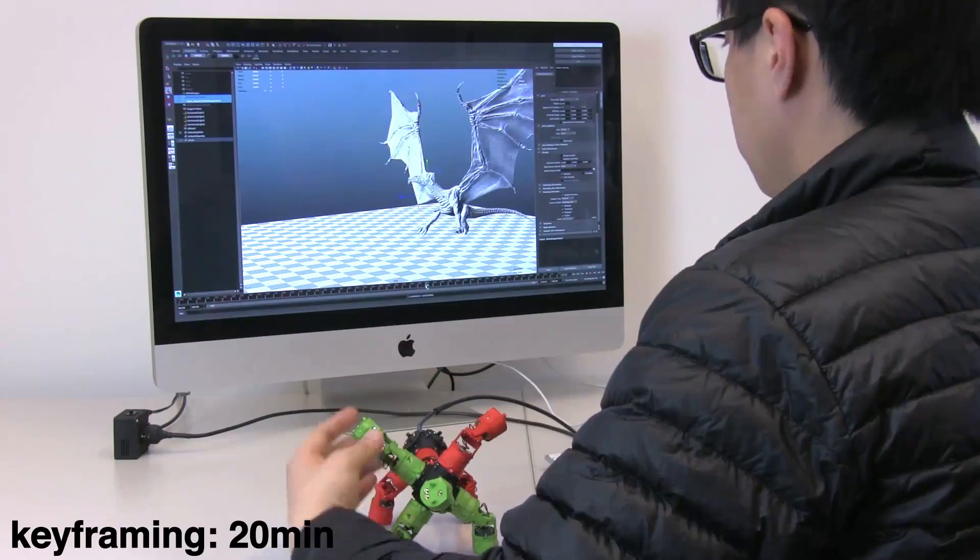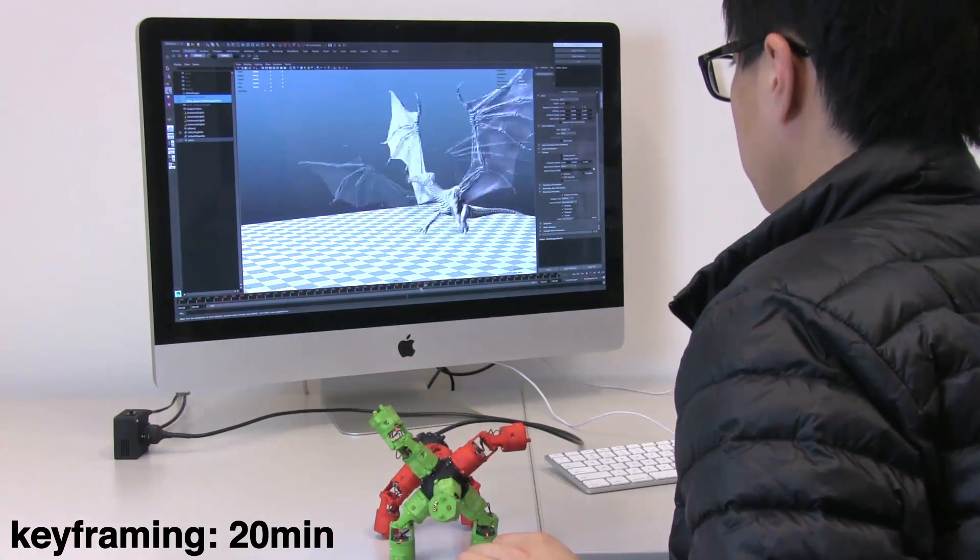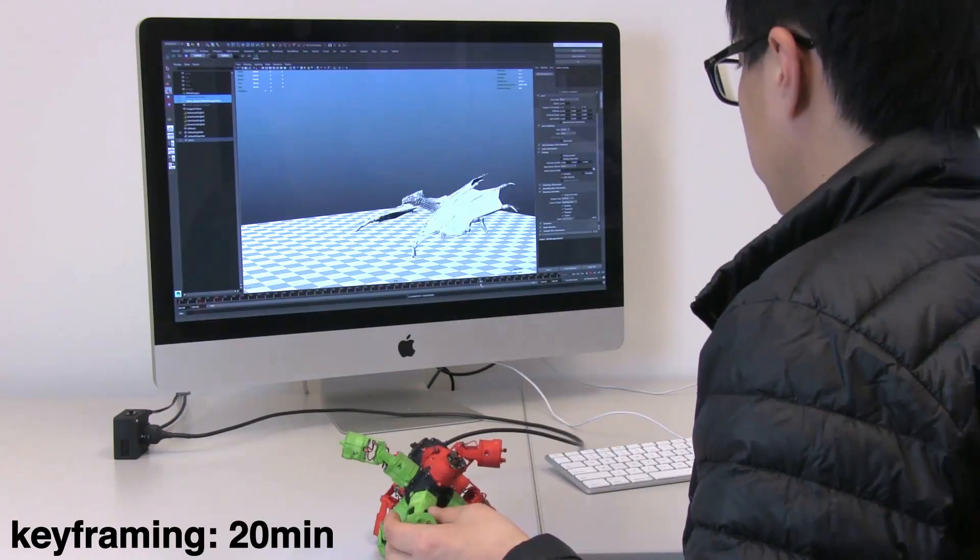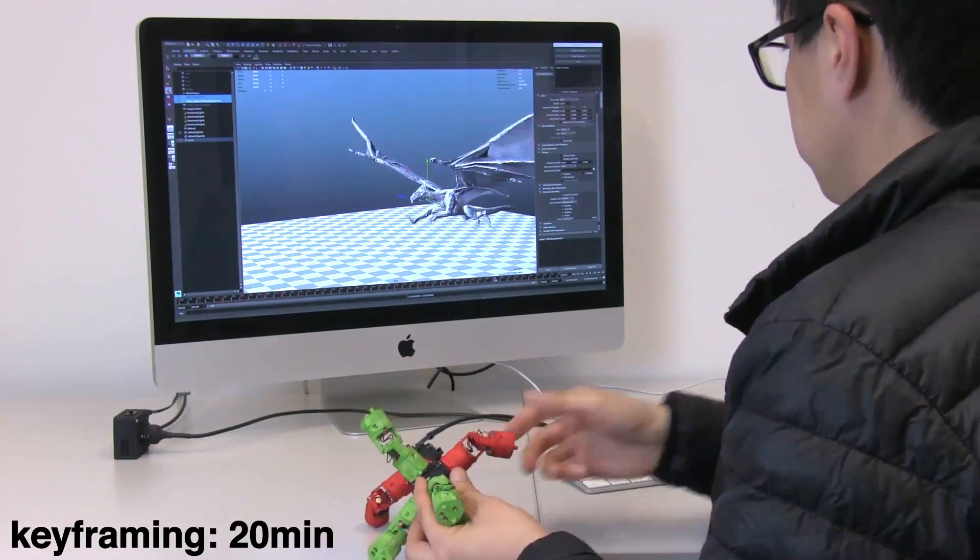A character with a complex rig can be keyframed with our method, creating a high-quality animation, with pose space interpolation reintroducing pose details, such as the moving tail of a flying dragon.